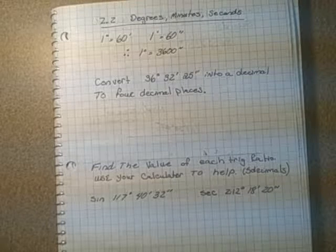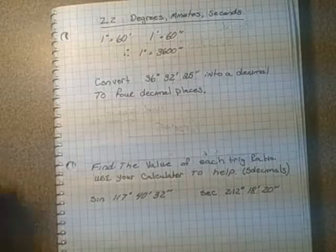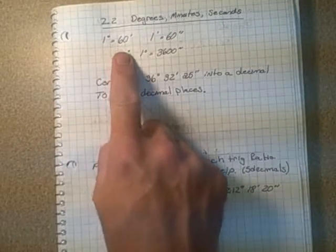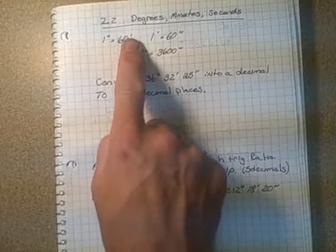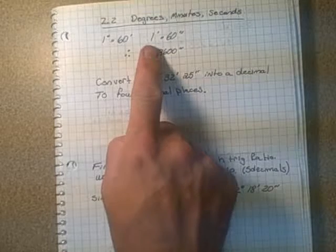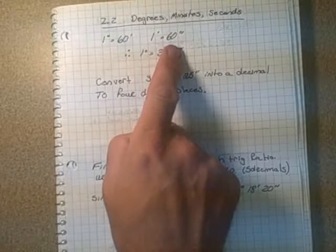The one thing you have to remember in this case, the formula you need to know is that a degree equals 60 minutes, and that a minute, which is just using one accent to represent minutes.